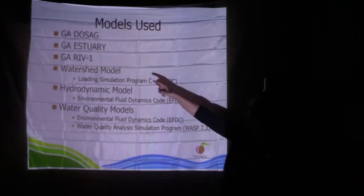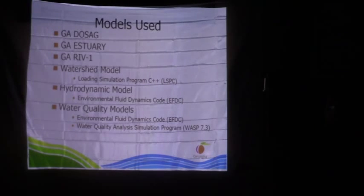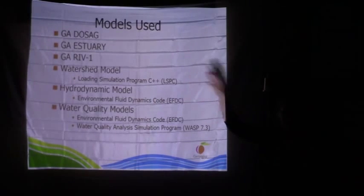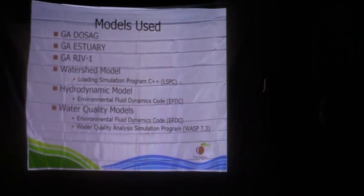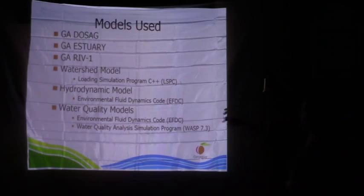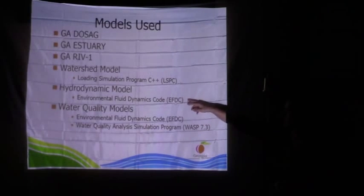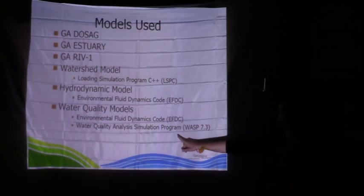We have one hydrodynamic model — it carries flow in the system — that we use downstream of dams in the state. We also use the Loading Simulation Program C++ (LSPC), a watershed-based model that takes into account land use, soil types, topography, and hydrography, and is basically run by precipitation. Rainfall falls on the landscape, flow comes off either into the ground or across the landscape, bringing water quality with it. We also have hydrodynamic models for our lakes and estuaries — EFDC (Environmental Fluid Dynamics Code) and WASP.